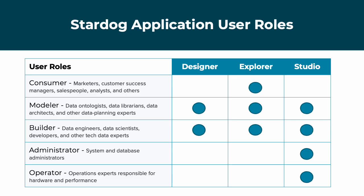Stardog applications are designed with different audiences in mind. Designer is for builders and modelers to create and maintain a knowledge graph — these users can build their data models, map data, and create inference rules right in the UI without writing any code. Explorer's easy-to-use interface enables consumers and builders of knowledge graphs to search, query, and visualize a knowledge graph. Studio is Stardog's IDE, used by administrators to configure user access, operators for performance tuning, and developers to write code to extend their knowledge graphs. Studio may also be used by modelers and builders who prefer to write code rather than using Designer and Explorer.